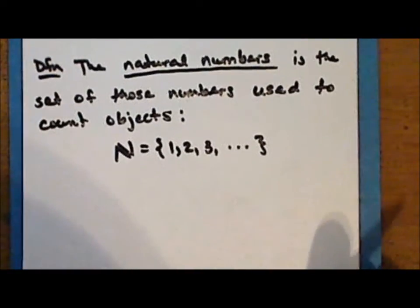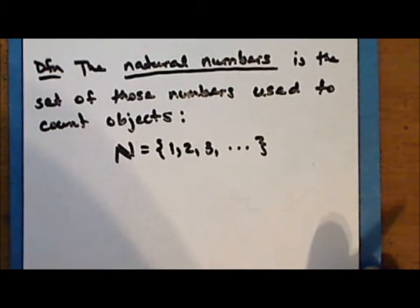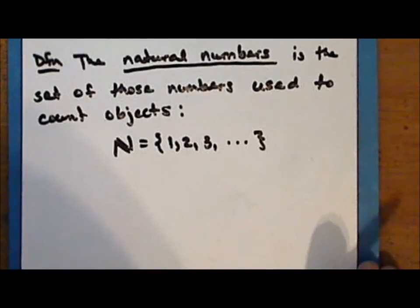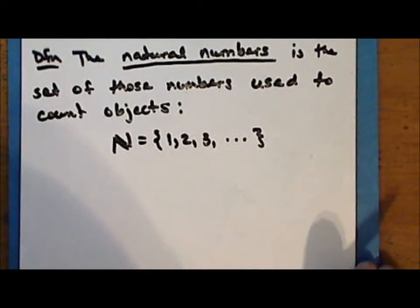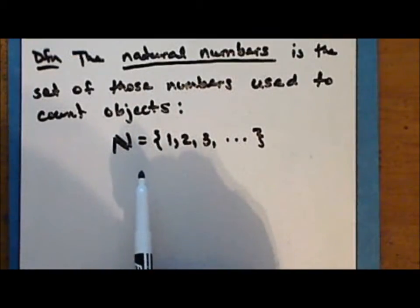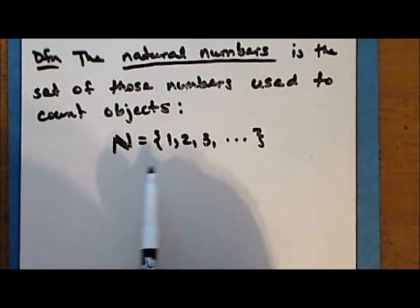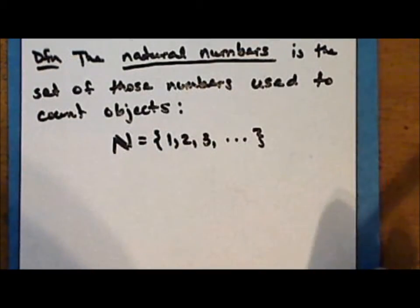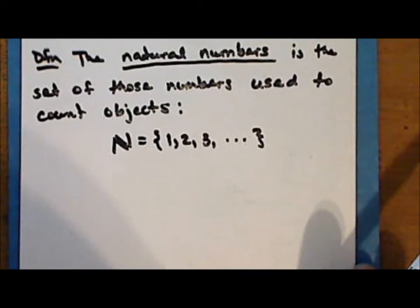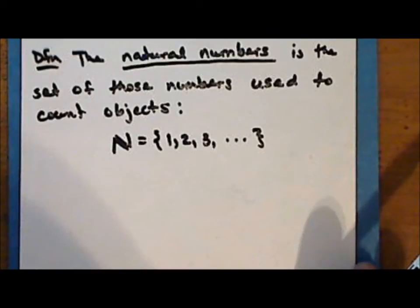Numbers that we use to count. The set of natural numbers is the most studied set in the history of mathematics. For historical reasons, the set does not include the number 0. The natural numbers came into being when people started counting objects, and the concept of the number 0 came much later in the history of mathematics. At first, the number 0 was not used in computation.